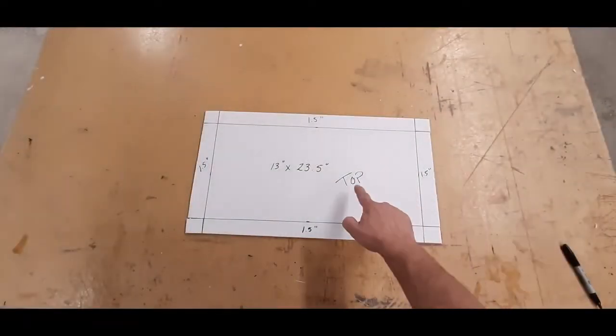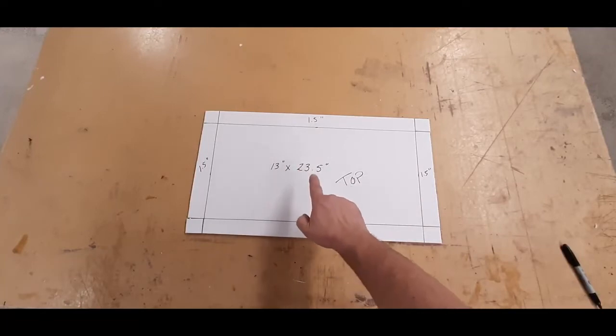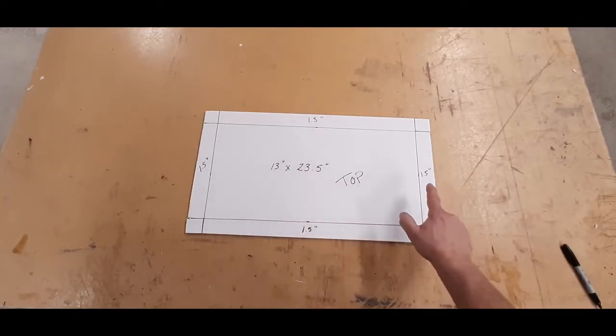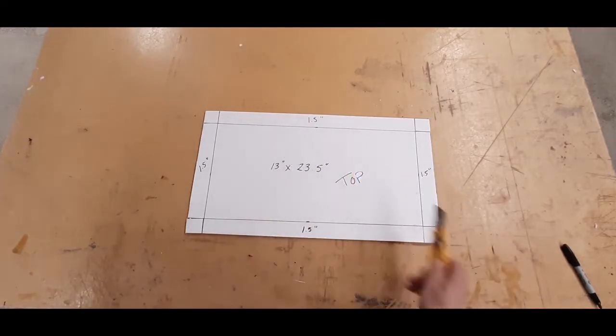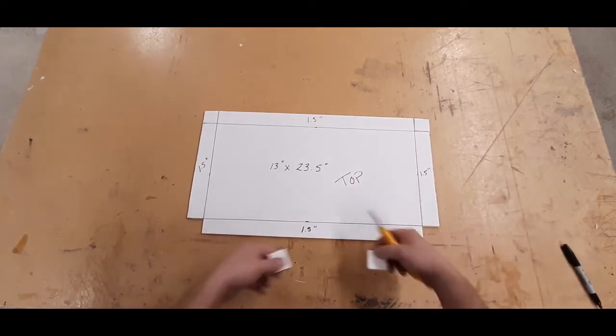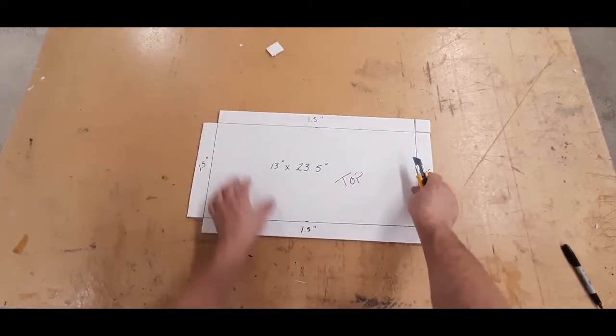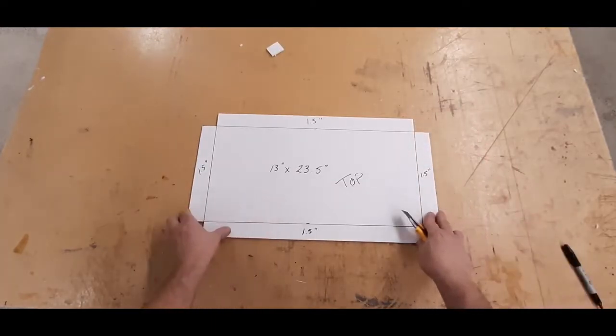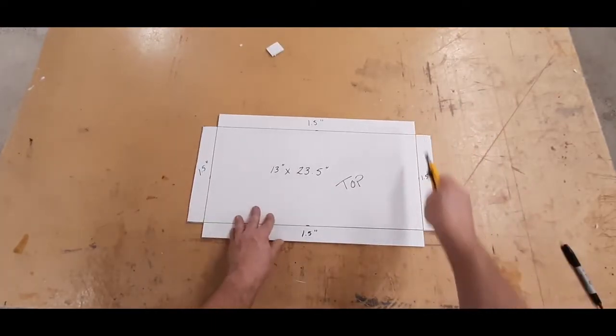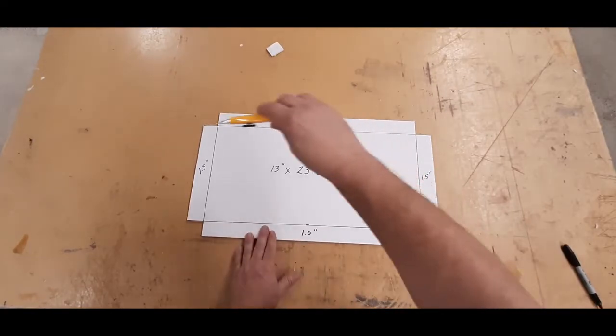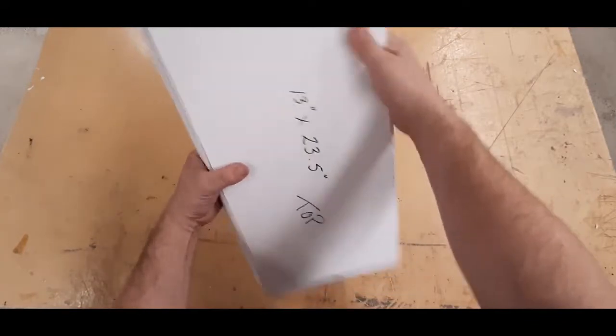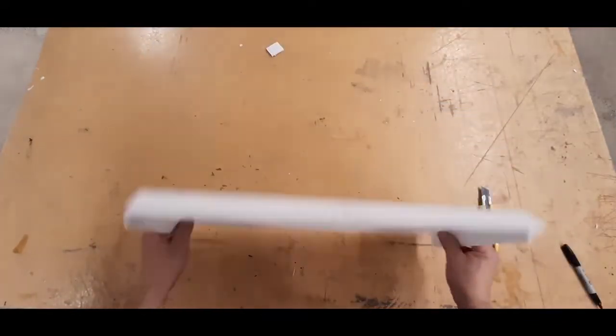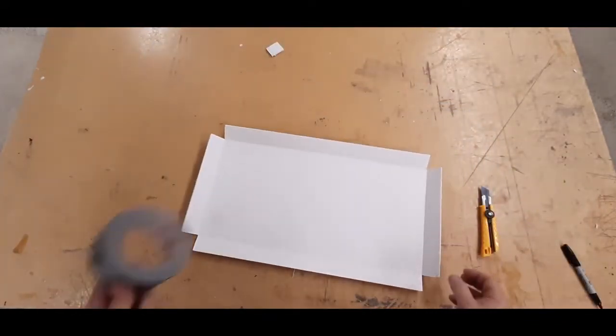Let's make the top for the box. Cut a piece from the second sheet that's 13 inch by 23 and a half inches and make a one and a half inch border on all sides. Take a knife and cut out the corners. Now score the remaining lines, but don't cut all the way through. Fold up the sides and then we can begin to tape the corners.